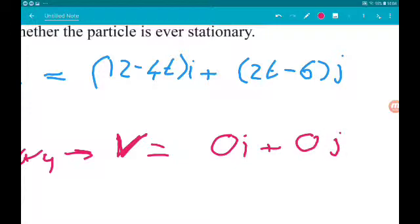So let's solve each component equal to 0 and see if we get a common solution. If there isn't a common solution, then it would always at least be moving horizontally or vertically or both. But if there is a common solution at that time, there would be no horizontal movement and no vertical movement.